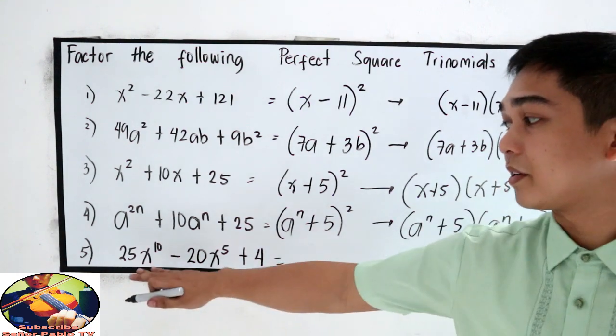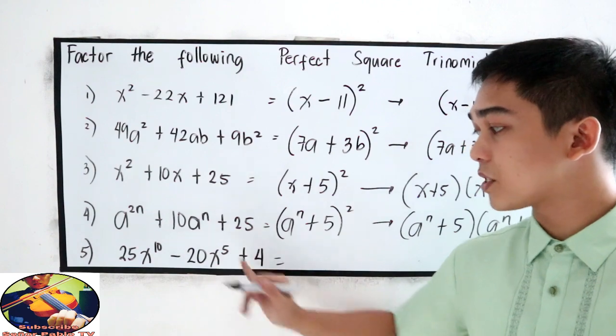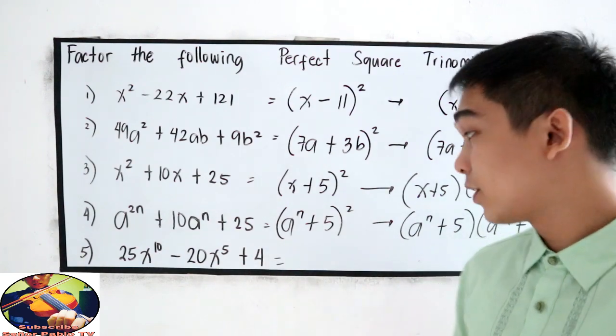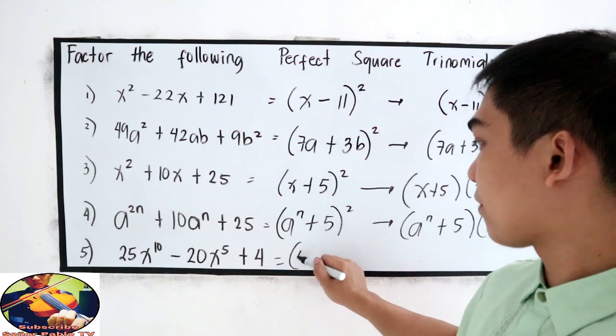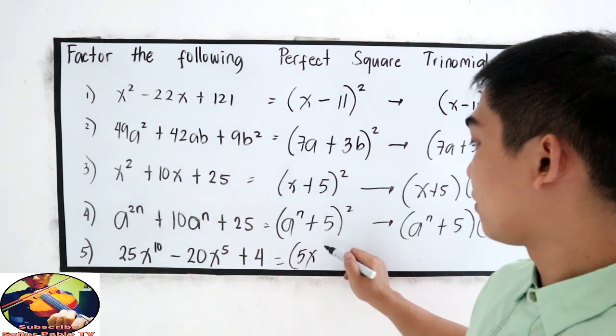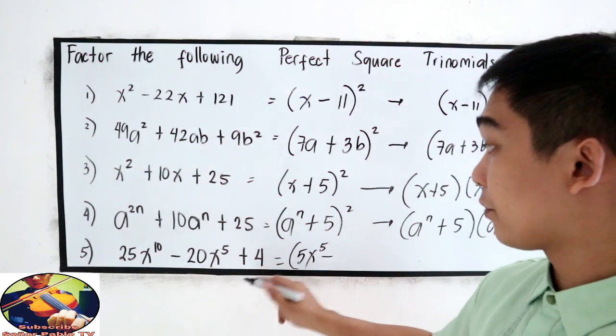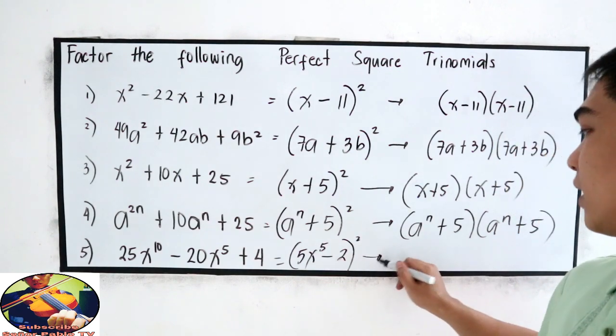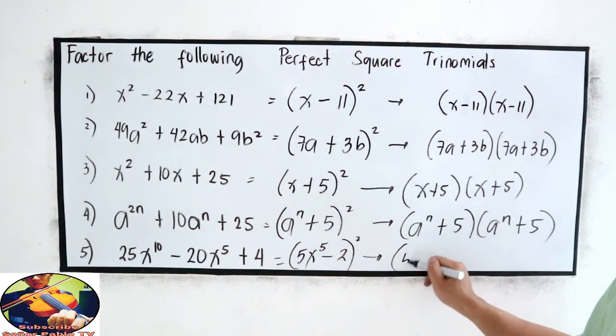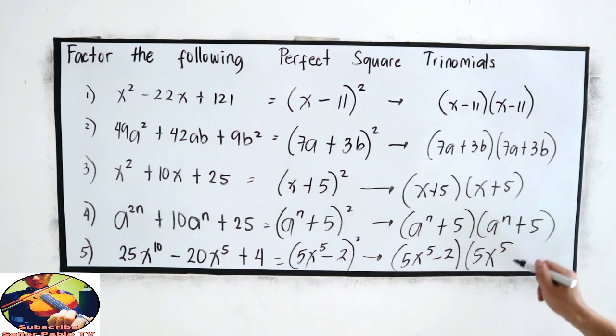And last number, 25x raised to 10 minus 20x raised to 5 plus 4. The square root of 25, that is 5, then x raised to 5, minus the square root of 4, that is 2, squared. And it can be written as 5x raised to 5 minus 2 times 5x raised to 5 minus 2.